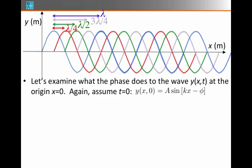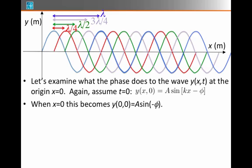Now, how do we see this for the initial conditions? Well, let's now think again at time t equals 0 and imagine what's happening at the origin. At time t equals 0, we have y of x and 0 is sine of kx minus phi. When x equals 0, this becomes y of 0 and 0 is sine of minus phi.